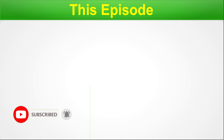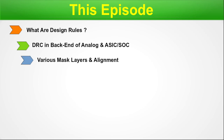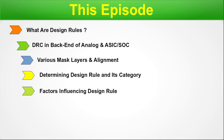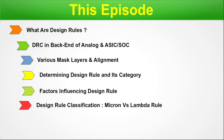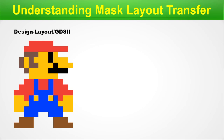Welcome back. In today's episode we are going to discuss the following topics: what are design rules and ERC in back-end of analog and ASIC design, various mask layers and their alignment with respect to ERC, determining the design rule and its various categories, factors that influence the design rule, classification and comparison of micron versus lambda rule, examples of intralayer and interlayer design rules, and finally a summary of the entire discussion.